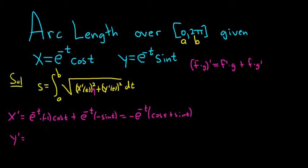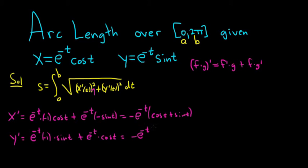For y prime, same thing — derivative of the first. The derivative of e to the negative t is e to the negative t times the derivative of the inside, so again negative 1, times the second: sine t. Plus the first piece, e to the negative t, times the derivative of sine, which is cosine t. I'll pull out a negative e to the negative t to be consistent, giving us negative e to the negative t times (sine t − cosine t).